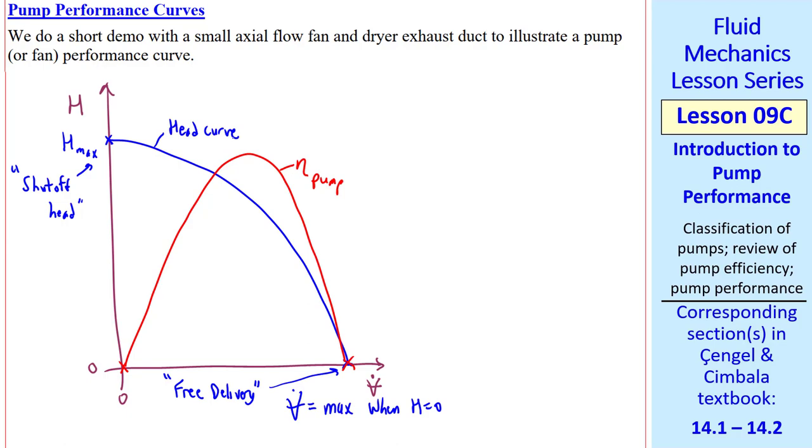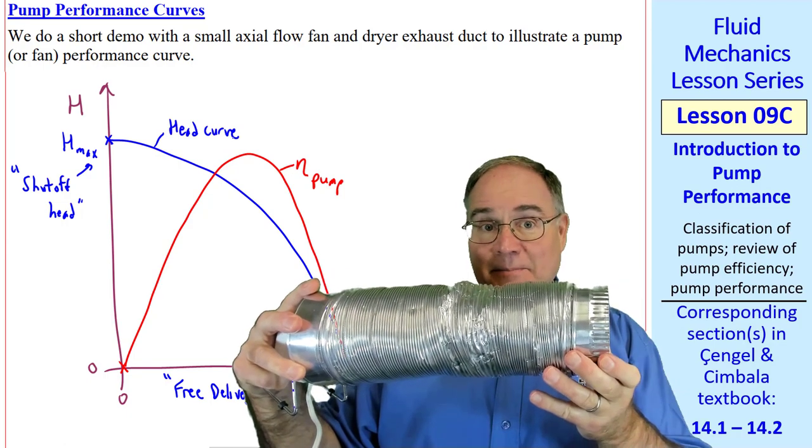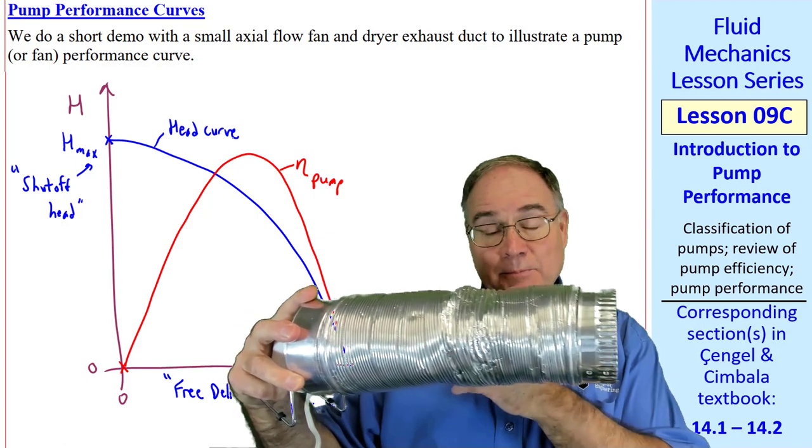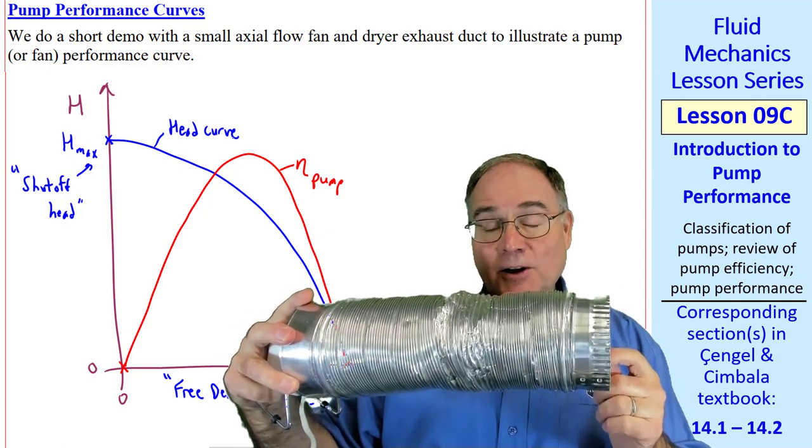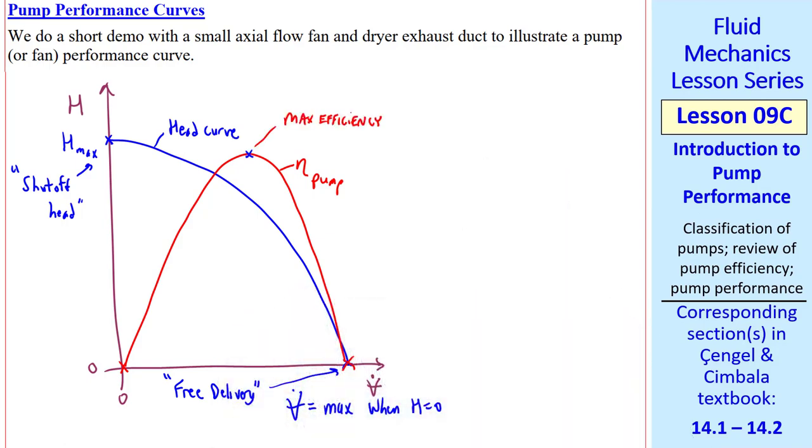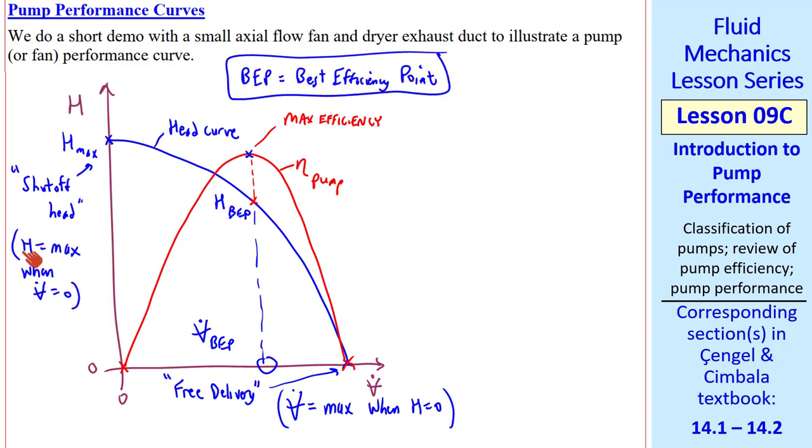The blue curve is the head curve, and the red curve is the efficiency curve. Some length of the pipe, there will be a maximum efficiency point, where we get both a head loss and a volume flow rate. You see that somewhere in here, we get a maximum efficiency. This volume is V dot BEP, and this head is H BEP, where BEP stands for best efficiency point.